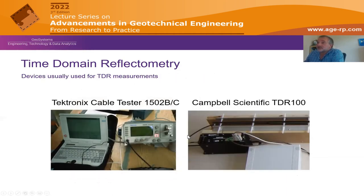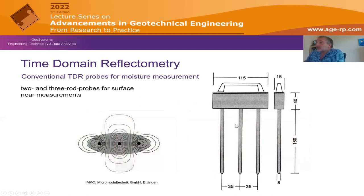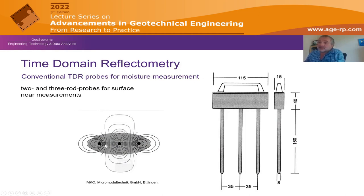Typical TDR devices include instruments from Campbell Scientific — the TDR 100 is now discontinued and a newer device is available. The conventional sensor is simply a fork shape where the signal is divided into three prongs: a charge-carrying wire in the middle and grounds on the sides. This configuration creates an electromagnetic field in the ground which responds to the conditions of the surrounding soil.